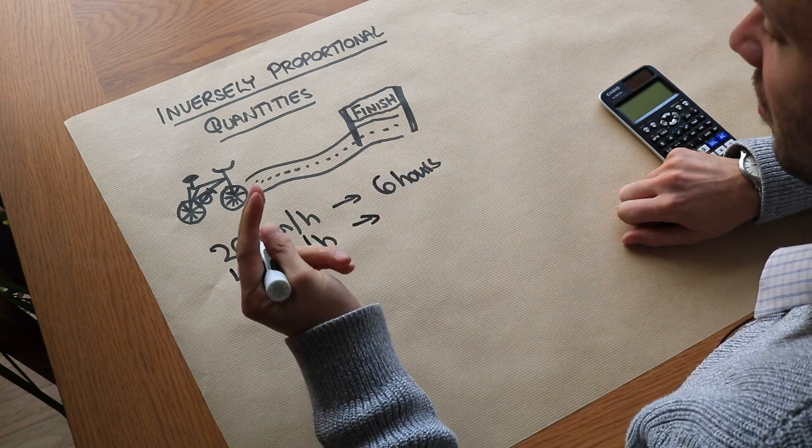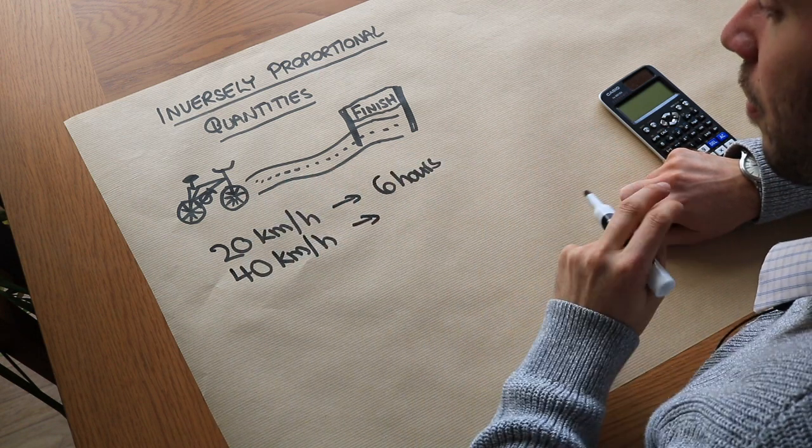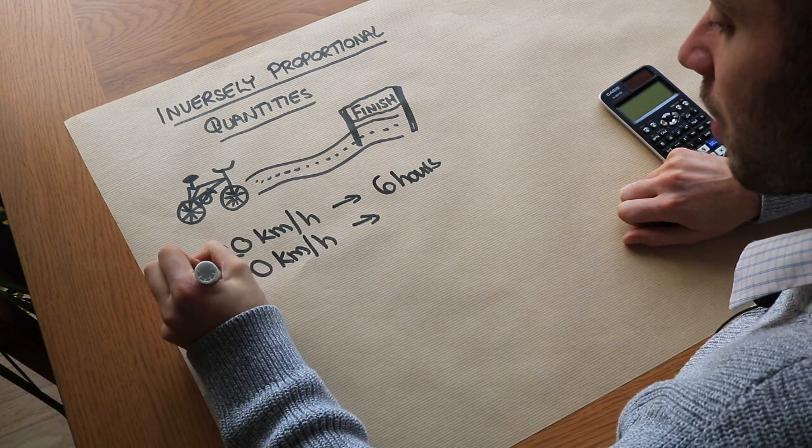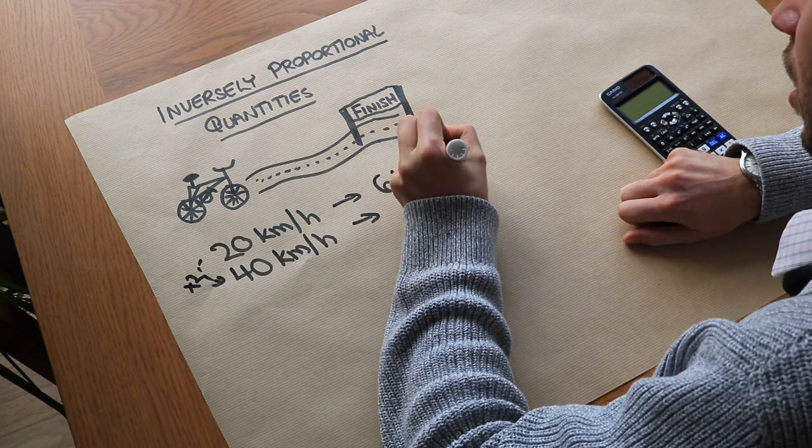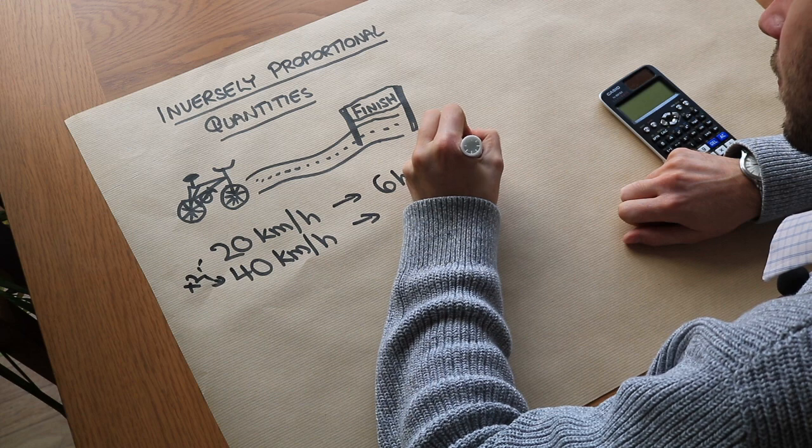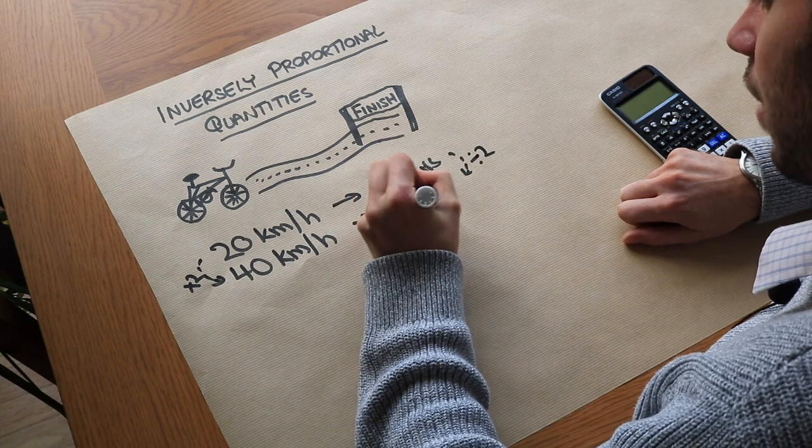Well, if you were to double your speed, you would halve the amount of time it would take. So if you double this, it would halve the amount of time, so it would be divided by 2, so it would take 3 hours.